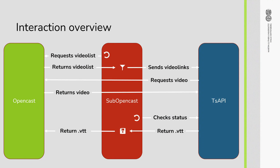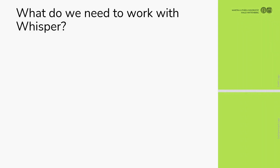One is called Transcription API — it's the API that gets called from the second program called SubOpenCast. The Transcription API is a Python program that calls Whisper, while SubOpenCast gets the video list from OpenCast and decides if a video needs a caption or already has one. To work with Whisper, you first need Python, because Whisper's model is trained with Torch.